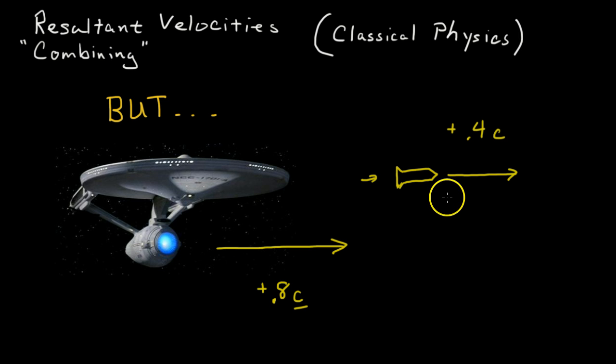Okay, so classical physics, what we've just learned of resultant velocities, we would say that 0.8 times the speed of light, positive direction, plus 0.4 times the speed of light, positive direction, will result in 1.2 times the speed of light. And that's all well and good. But unfortunately, we know that the speed of light is the fastest speed that can be acquired in the universe. And so this is not a possibility.